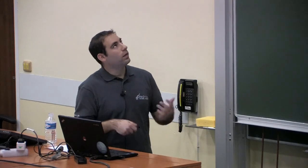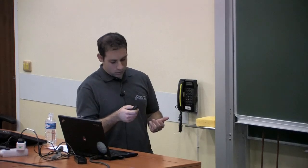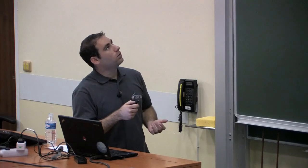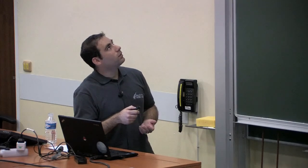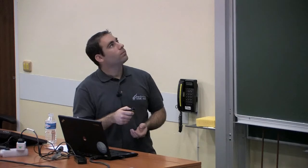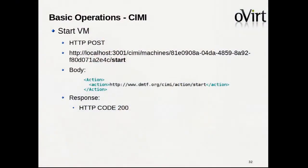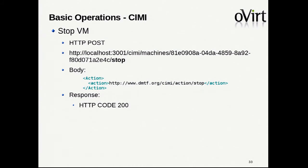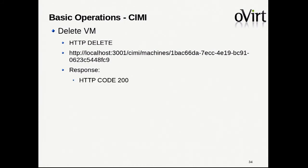Starting a VM is an action, so it's HTTP POST on the specific VM ID with the action set to 'start' in the body — that's the DMTF standard — and the response is just HTTP 200 OK. Stopping a VM is really the same. Deleting is HTTP DELETE: just specify which VM and HTTP DELETE removes it.